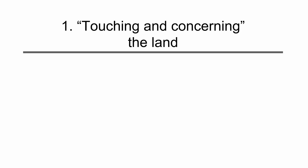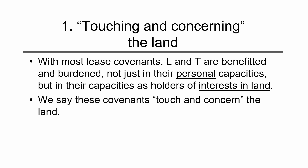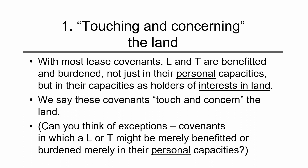The first requirement is that the covenant must touch and concern the land. With most lease covenants, landlords and tenants are benefited and burdened not just in their personal capacities but as holders of interests in land — the rents and reversion interest for the landlord, the leasehold interest for the tenant. That's why we say such covenants touch and concern the land. Can you think of exceptions — covenants beneficial only in personal capacities, not because of the land interest?